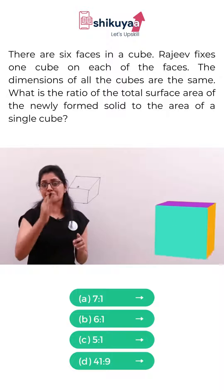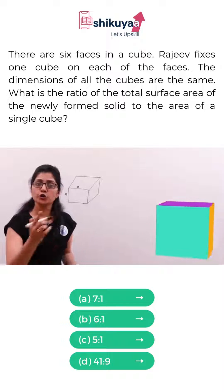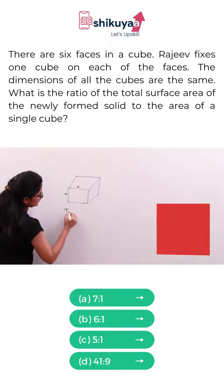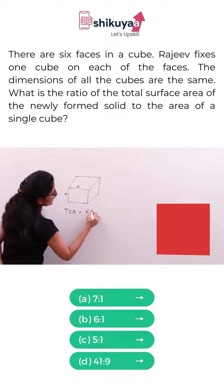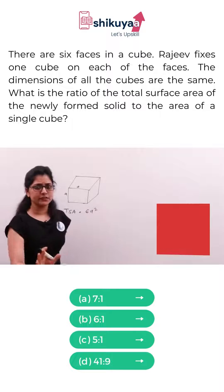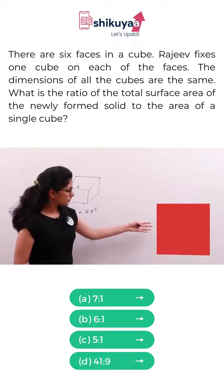So six surfaces as the cube has six surfaces, total surface area should be six A square. That's very clear to us. Now what happened? Just observe here.